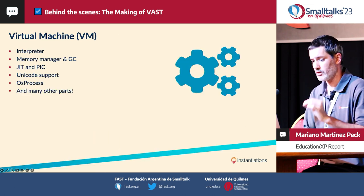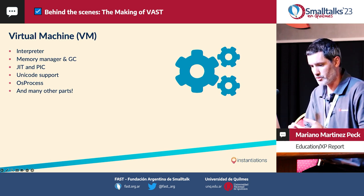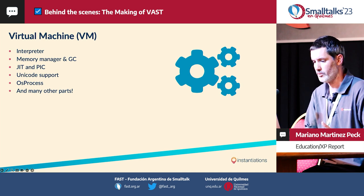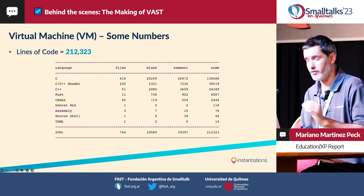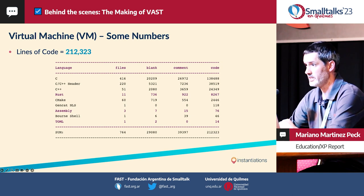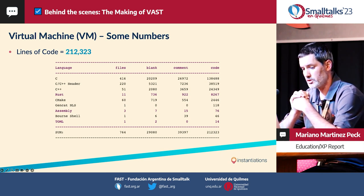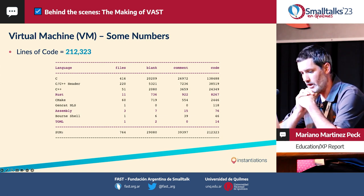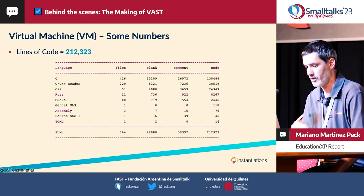If we then analyze the virtual machine, we also have a lot of sub-components: the interpreter, the memory manager and garbage collector, the just-in-time compiler, the polymorphic inline cache, Unicode support, OS process, and many other parts. The virtual machine is composed of a lot of internal details. Most of it is developed in C and C++, but we also have a lot of Rust — for example, for our Unicode support — some assembly, and a couple of other things. That's around another 200,000 lines of code for the virtual machine.